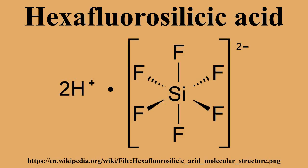SiF4 is also produced as a byproduct from the production of phosphoric acid from apatite and fluorapatite. Again, some of the HF in turn reacts with silicate minerals, which are an unavoidable constituent of the mineral feedstock, to give silicon tetrafluoride. Thus formed, the silicon tetrafluoride reacts further with HF. The net process can be described as: SiO2 + 6HF → SiF6²⁻ + 2H3O⁺.